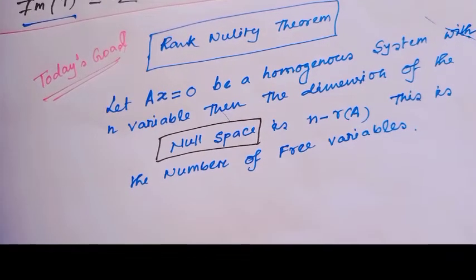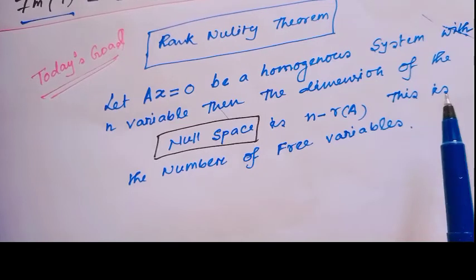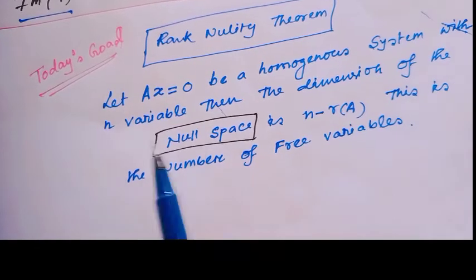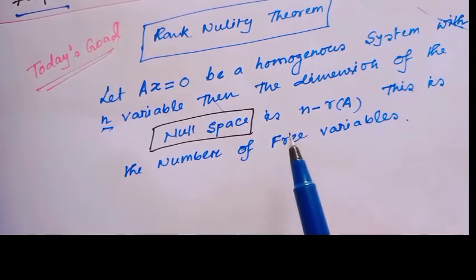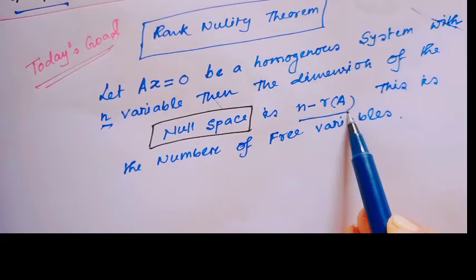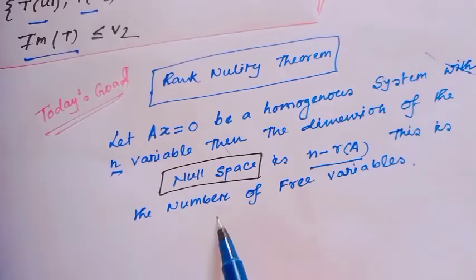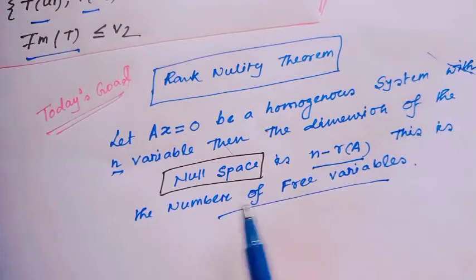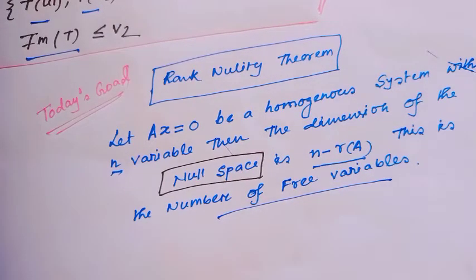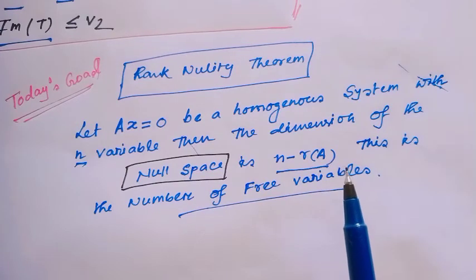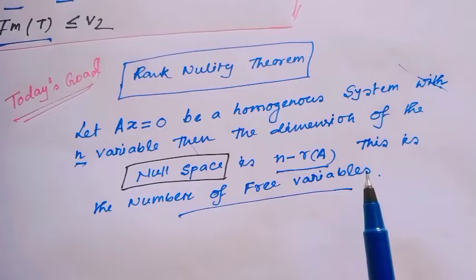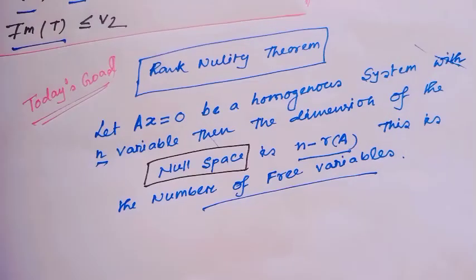By this lecture I will show that if a homogeneous equation has n variables, then the dimension of the null space is n minus rank of A. This is actually the number of free variables. We all know null space means the number of free variables, and by this theorem I will see not only the dimension of null space but also the dimension of the range space.